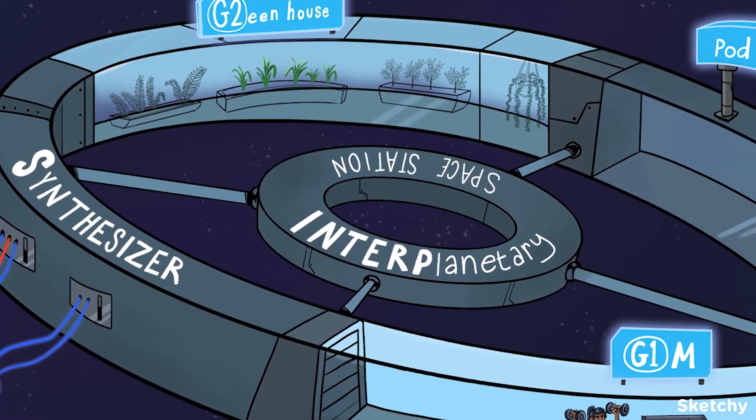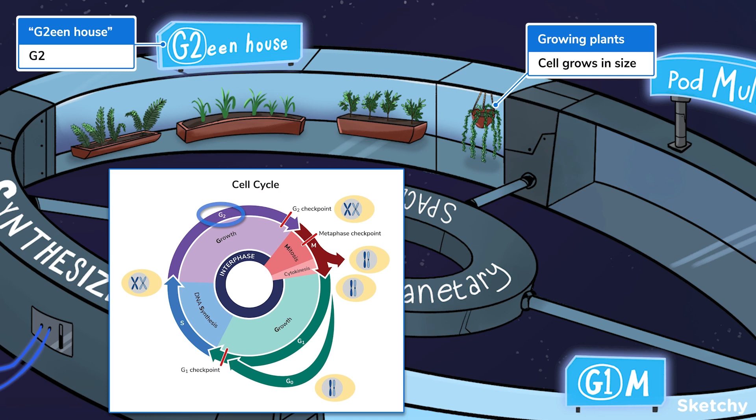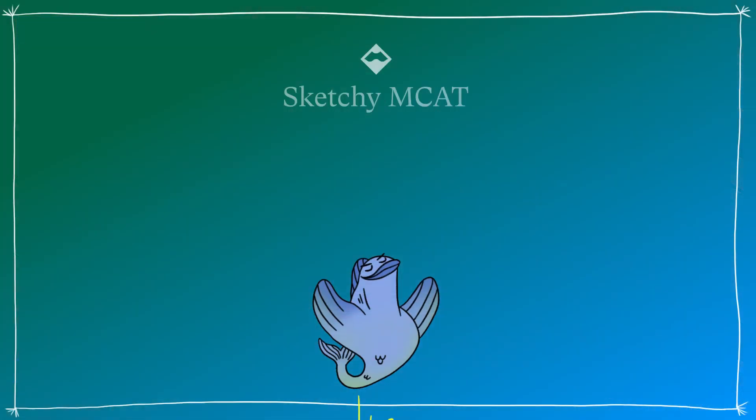The final part of interphase is G2, also called the second gap or growth stage. And what better place to illustrate that than by this greenhouse. Check out these growing plants. That guy from that book about being stuck on Mars would be proud.